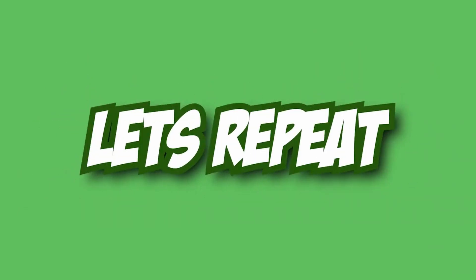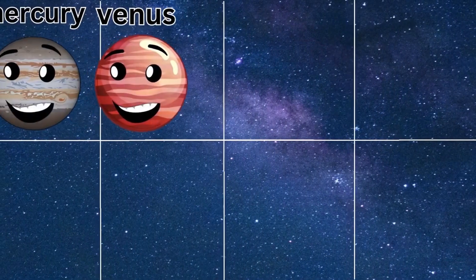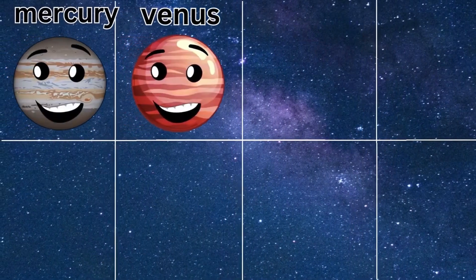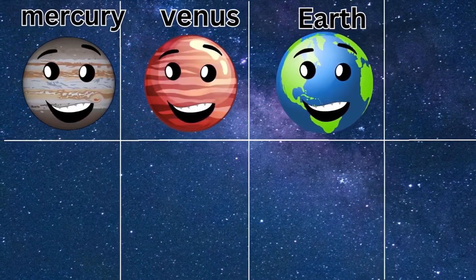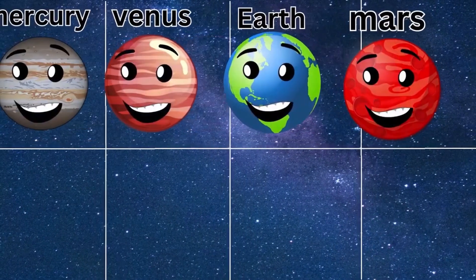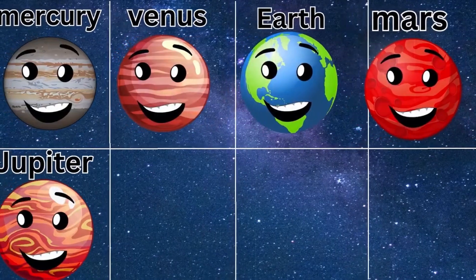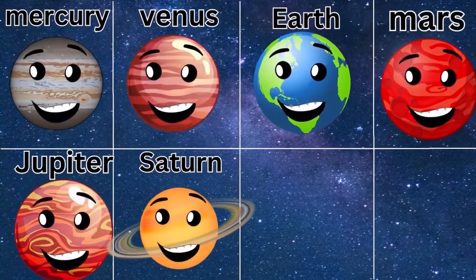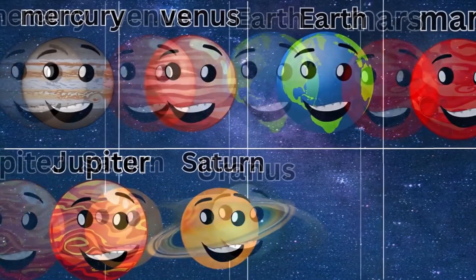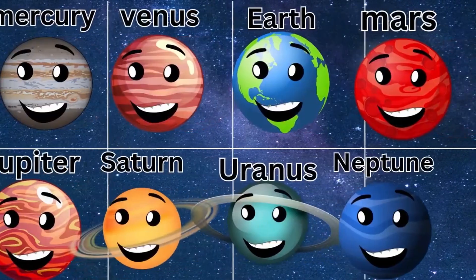Let's repeat it one more time. Mercury, Venus, Earth, Mars, Jupiter, Saturn, Uranus, Neptune.